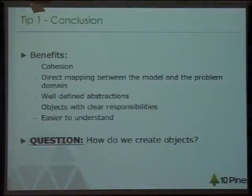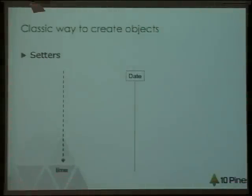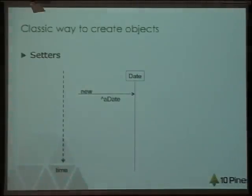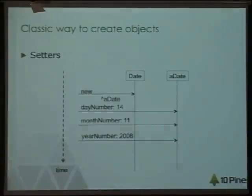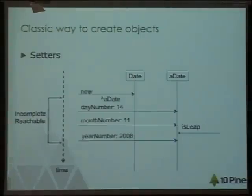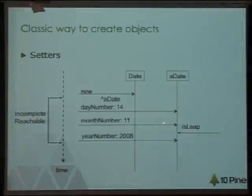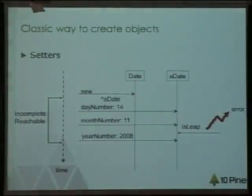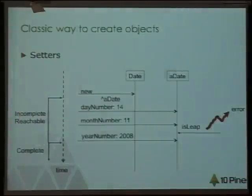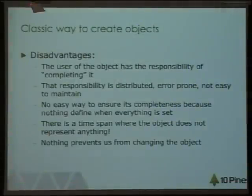Now I'm going to talk about another problem: how do we create objects? The classic way is — in Smalltalk — you create an instance of a class, then you send setter messages to set the instance variables of that object. But during that time, the object is incomplete. If somebody sends the message isLeapYear to that date between those two setters, it will raise an error because it doesn't have the year number. The object becomes complete only after the last setter. The responsibility of completing the object is not in the object itself, but in whoever is using it — difficult to maintain.